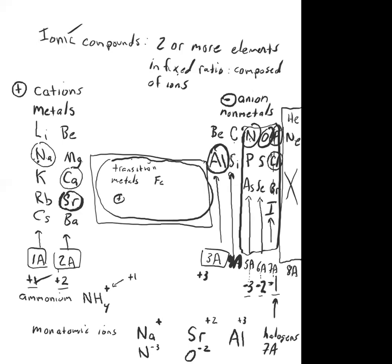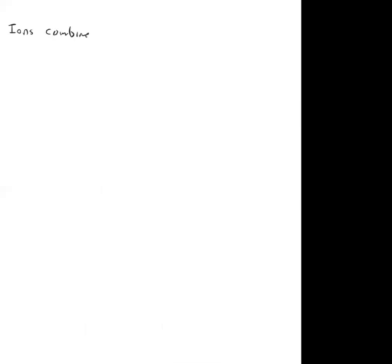So those are the monatomic ions — monatomic just means one atom. If you look at the chemical formula for one of these ions, there's just one atom in there. It's just Na, not Na2 or NaO. Same thing with the oxide ion — there's one oxygen in there. These ions combine with each other in nature to form ionic compounds. So these monatomic ions combine to form ionic compounds.